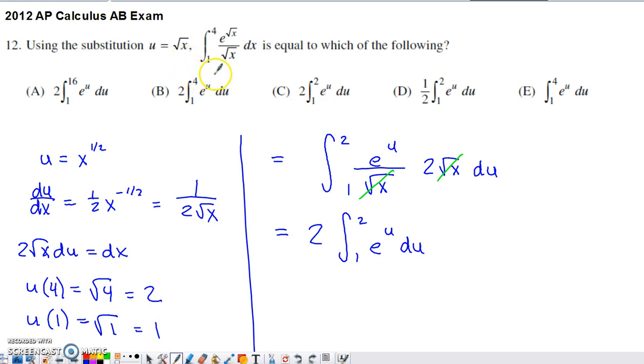We then want to figure out how this substitution applies to the definite integral from 1 to 4 of e to the square root of x over the square root of x, taken with respect to x. Which of these expressions is going to be equal to that definite integral?